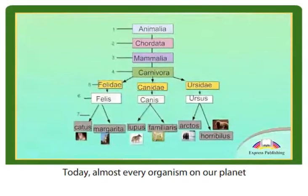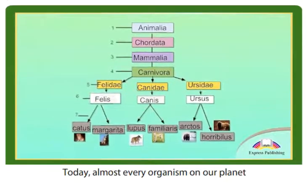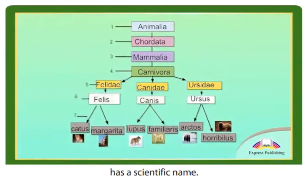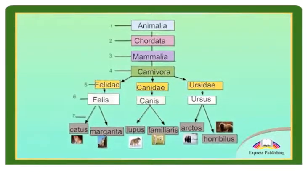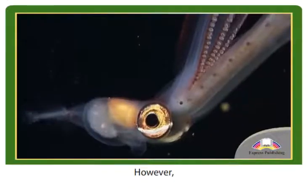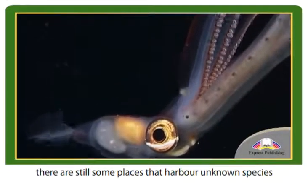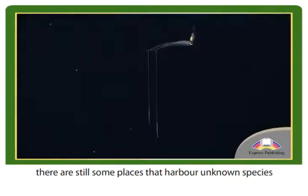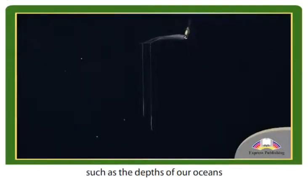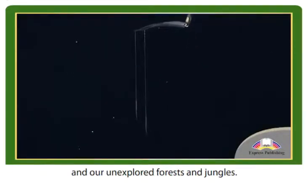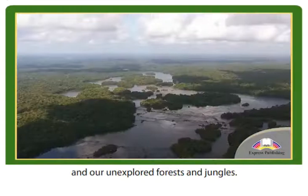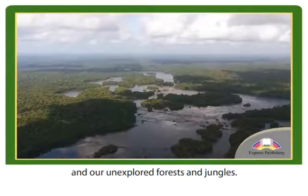Today, almost every organism on our planet has a scientific name. However, there are still some places that harbour unknown species, such as the depths of our oceans and our unexplored forests and jungles.